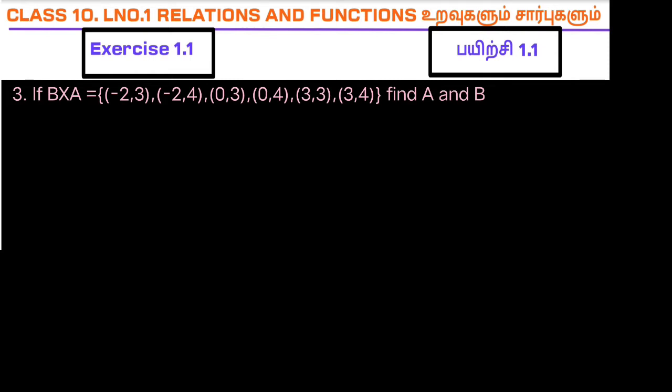If B×A = {(-2,3), (-2,4), (0,3), (0,4), (3,3), (3,4)}, find A and B.